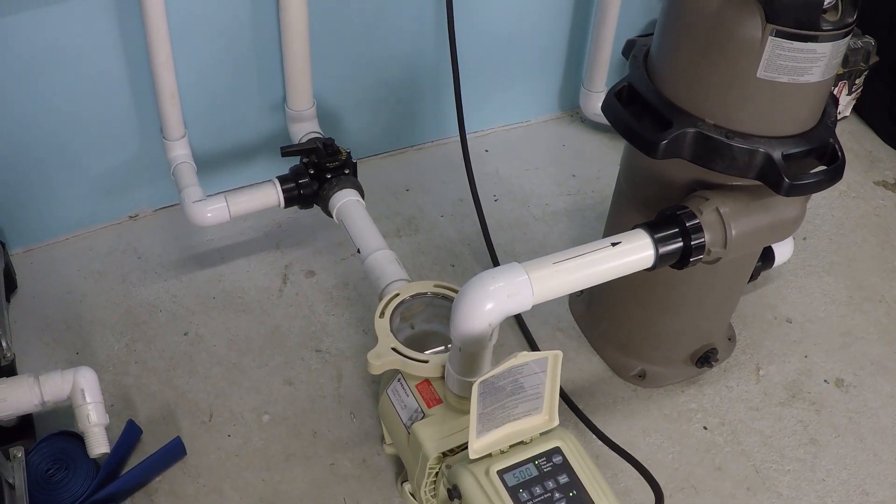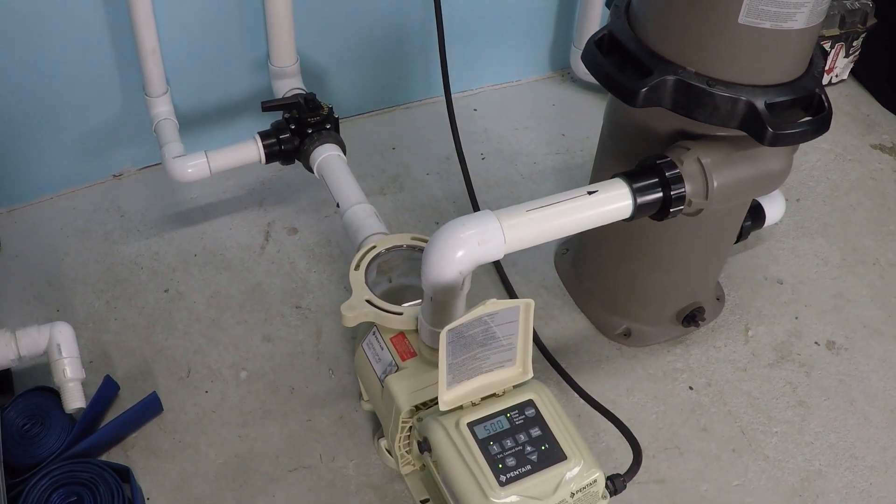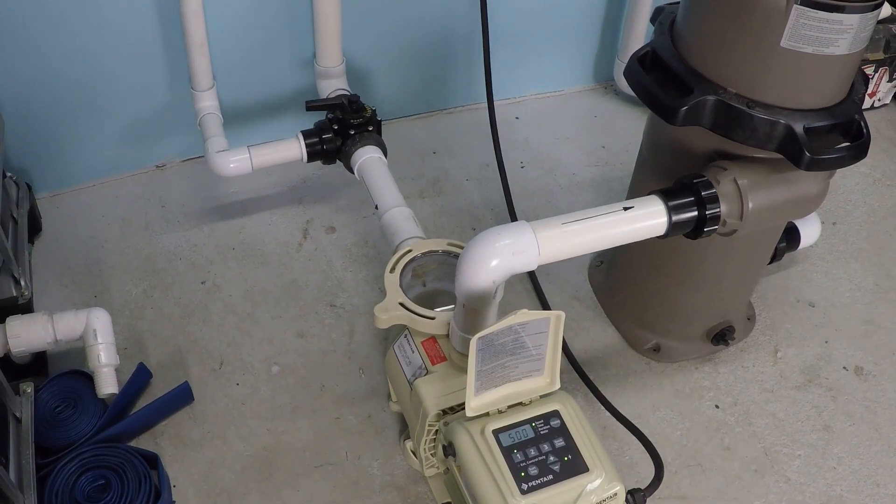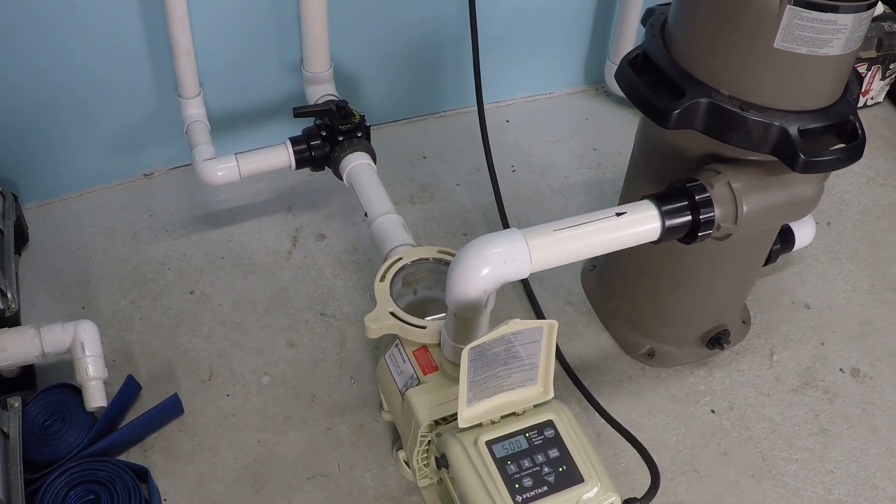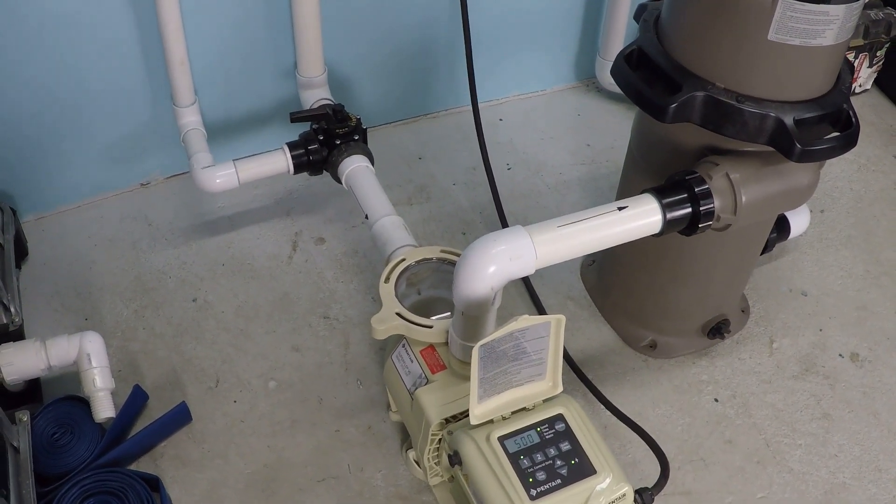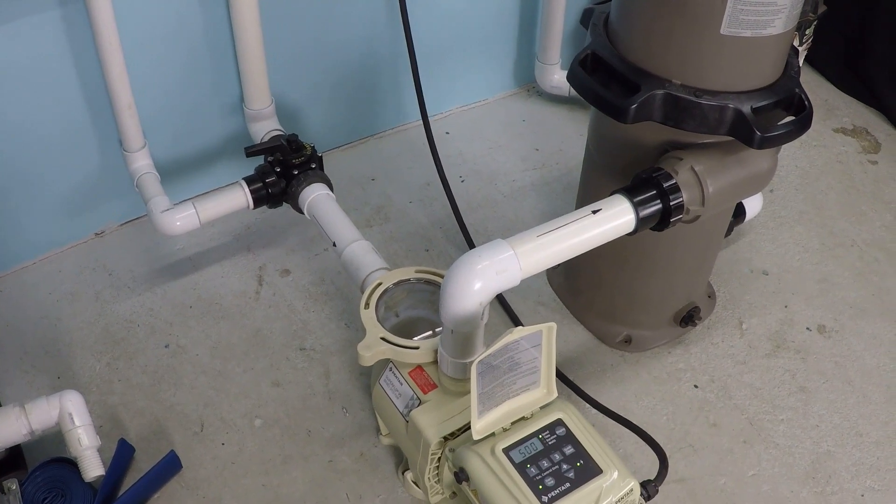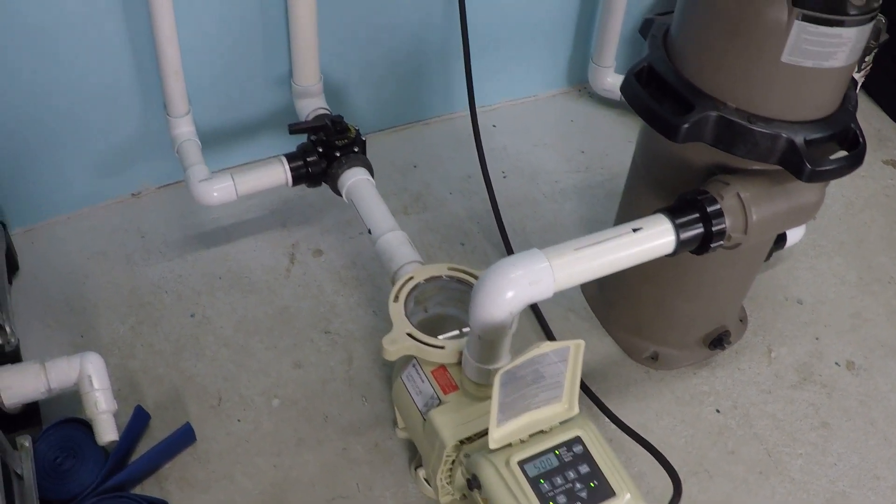People who don't like variable speed pumps will often say, well, you can't run it at low RPM. What if you have a salt system? Then you need to run it at a higher RPM because the salt system needs to generate chlorine and it takes a long time to do that. And that is true, that is good information.